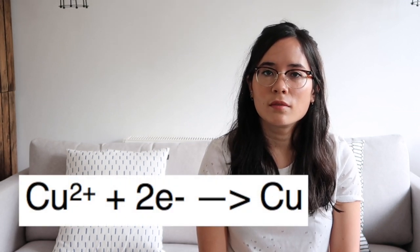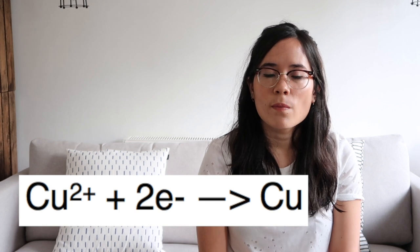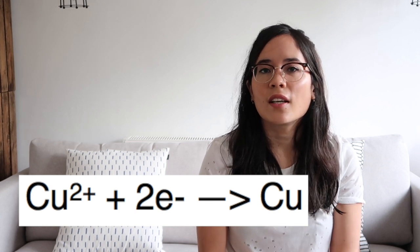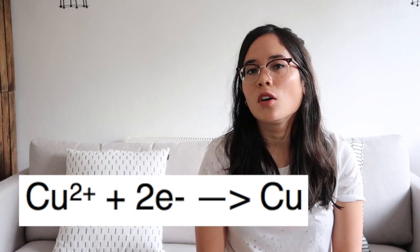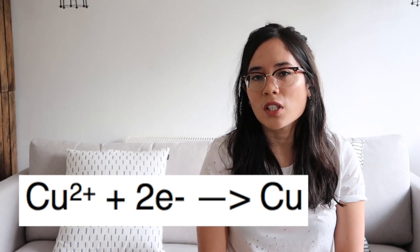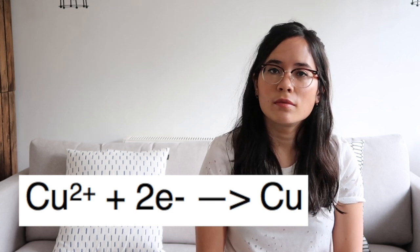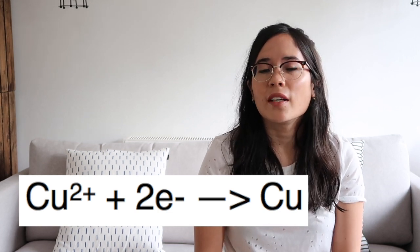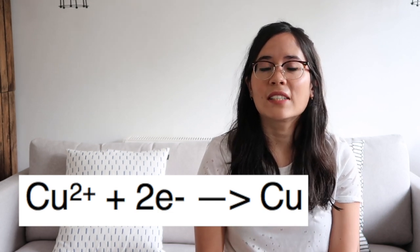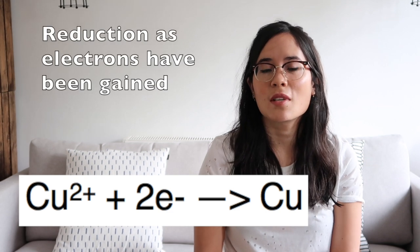Write the half equation for when copper discharges. Now you've done that equation — is this reaction oxidation or reduction, and say why. When copper ions form copper atoms, you have to add electrons, which means it's a reduction reaction.